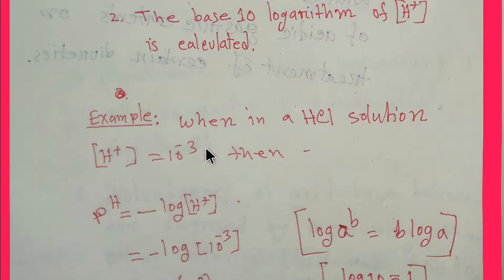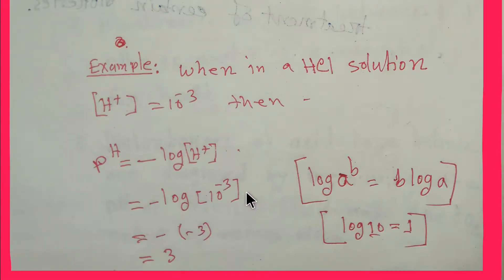So suppose you have a solution where the concentration of hydrogen ion is 10 to the power minus 3. If you put the value of hydrogen ion here, then you are getting 3.